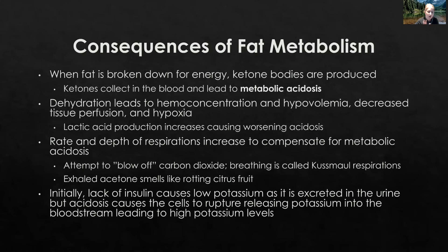Initially, our body is going to have a low potassium level because that lack of insulin causing polyuria means we're losing electrolytes, including potassium, in the urine. But as that acidosis increases — as the pH level decreases and acidosis gets worse — our cells are going to rupture and die because they can't live in that acidotic state. Potassium, which lives inside the cells, is going to leave the ruptured cells and travel into the bloodstream, resulting in a very high potassium level with many cardiovascular consequences.